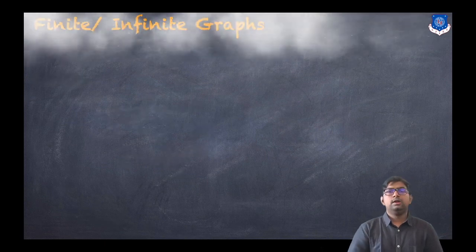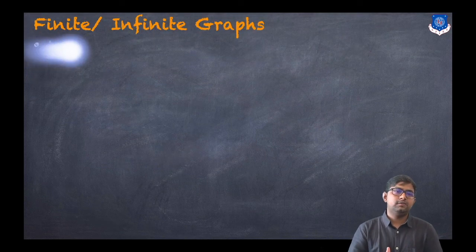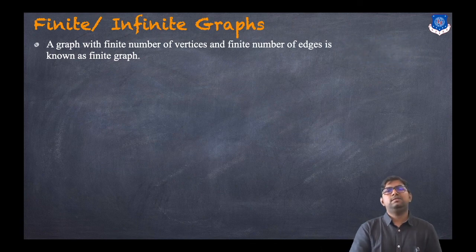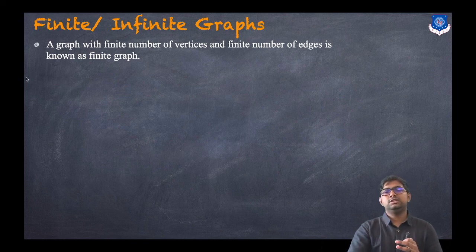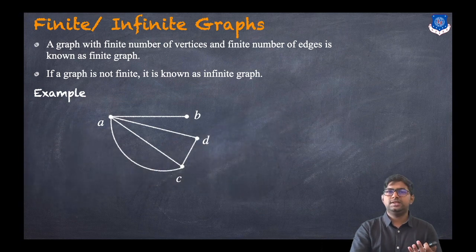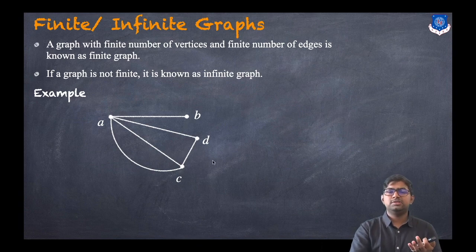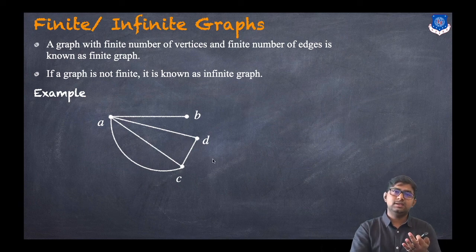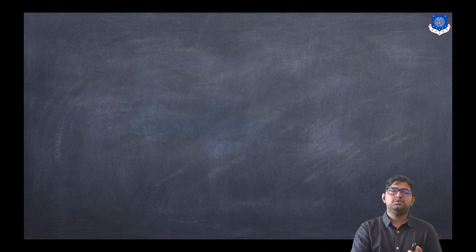Now let us discuss finite and infinite graphs. A graph with a finite number of vertices and a finite number of edges is known as a finite graph. A graph that is not finite is known as an infinite graph. Any of the example graphs here — with four vertices and five edges — is an example of a finite graph. You can create your own examples as well.